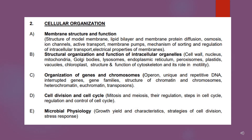The second unit is Cellular Organization, which includes mainly cell biology. Some topics of this unit are important for CSIR, so go through the previous year papers to find those topics and prepare them very well.